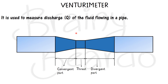This Venturimeter works on a simple principle called Bernoulli's equation. When the fluid flows through the convergent part, it experiences a pressure change — when the area reduces, the pressure reduces and the velocity increases. This difference in pressure between the two ends of the convergent part is measured, and with that pressure difference we can calculate the discharge Q.